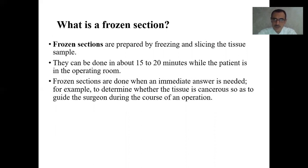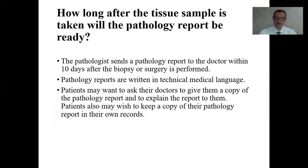Frozen sections are prepared by freezing and slicing the tissue sample, which can be done in about 15 to 20 minutes while the patient is in the operating room. Frozen sections are done when an immediate answer is needed — for example, to determine whether tissue is cancerous so as to guide the surgeon during an operation. The pathologist sends a pathology report to the doctor within 10 days after the biopsy or surgery is performed.